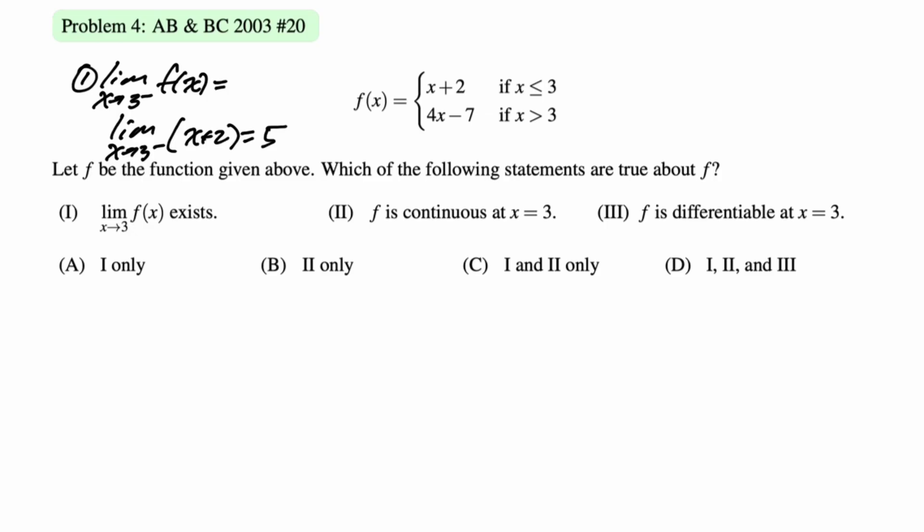We've got to find the limit from the left. So the limit as x approaches 3 from the left of F of x is the limit as x approaches 3 from the left of x plus 2. And then you just plug in 3 and you get 5. Now we need the limit from the right because if the limit from the left doesn't equal the limit from the right, then the limit doesn't exist. So the limit from the right is the limit as x approaches 3 from the right of 4x minus 7. That's 12 minus 7 is 5. The limit does exist.